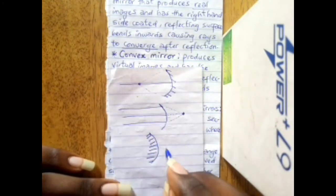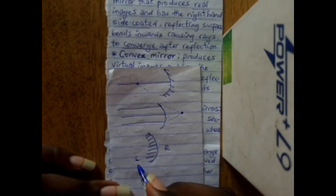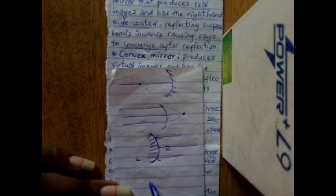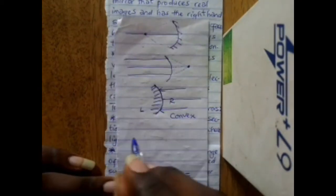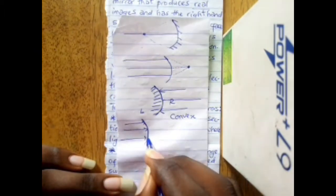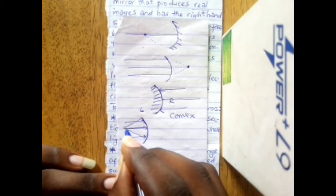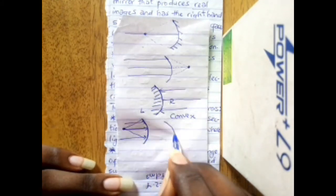For a concave mirror the right-hand side is coated, and this is our reflecting surface where light rays are incident. For a convex mirror, the reflecting surface bends outwards causing rays to diverge, whereas for a concave mirror the reflecting surface bends inwards so light rays tend to converge.